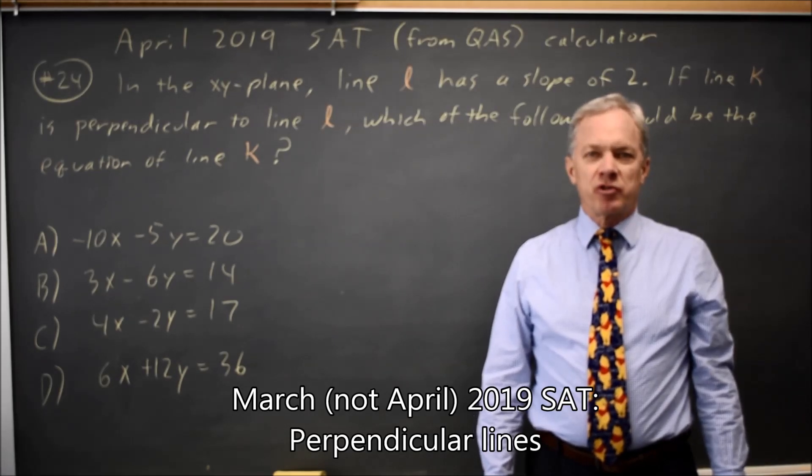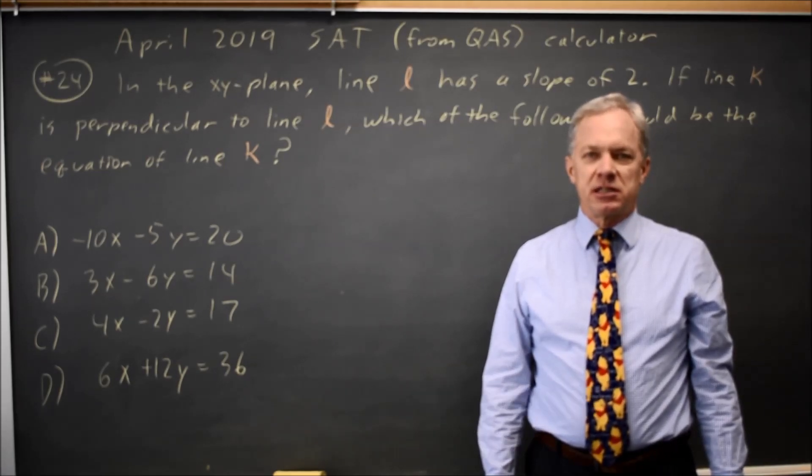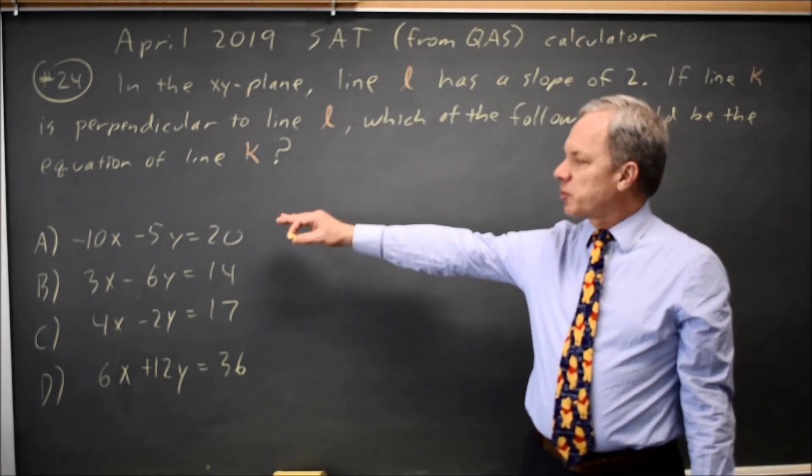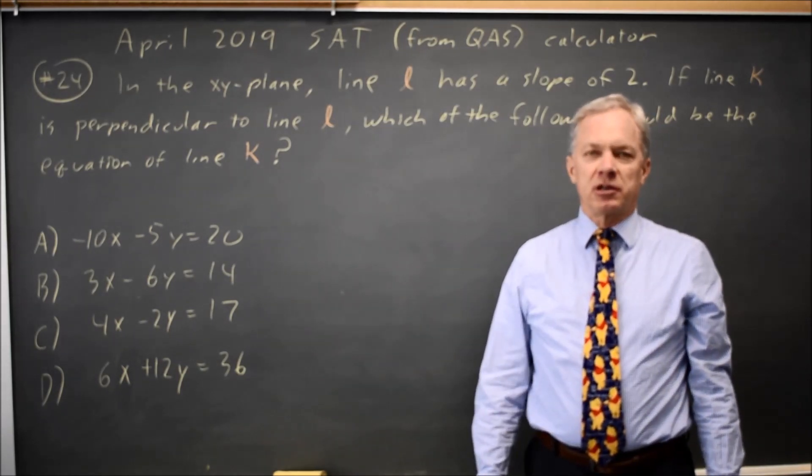This is calculator question number 24 from the March 2019 SAT. College Board tells us that line L has slope 2 and they ask if line K is perpendicular, which of these four could be the equation of line K?